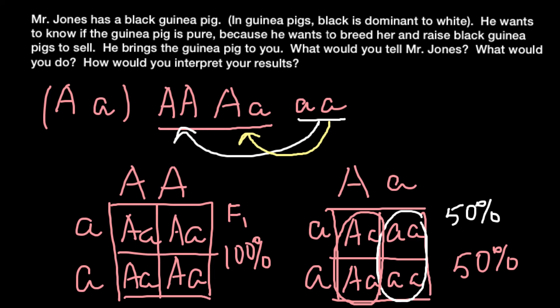So if Mr. Jones' black guinea pig is heterozygous, this would be our result of the test cross — the trait would segregate. But if he has a pure breed and we test cross with a white guinea pig, 100% of the progeny would still be black, and we instantly know his guinea pig is pure breed. If we get segregation in the results, that means his guinea pig is not pure breed and is heterozygous for this trait.